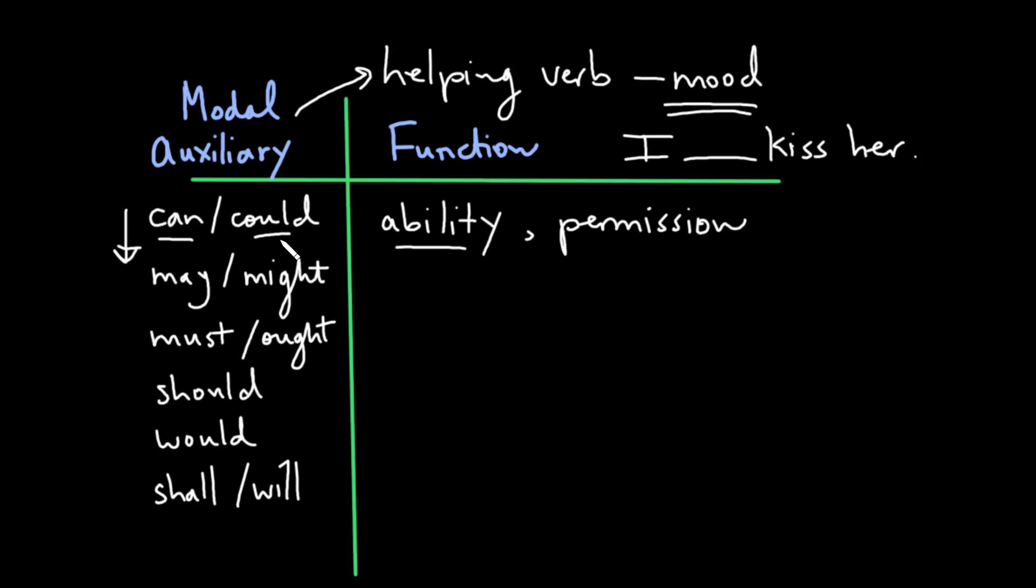Could, on the other hand, tends to express more the possibility of something. I could kiss her. So the possibility of something. But it might even express something like surprise or excitement. I could kiss her. You know, this is so exciting. Maybe it expresses something more like that.